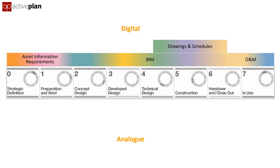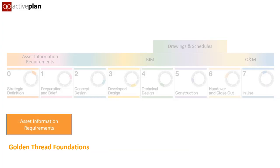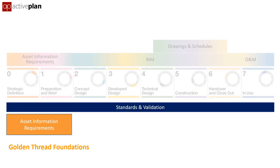To generate the required documents from the coordinated data model — geometry and data — and ensure the right data is being provided in the right format, we need to start by providing designers and the supply chain with a clearly defined asset information requirement. This creates the auditable standards and tests each submission from stage 3 onwards.